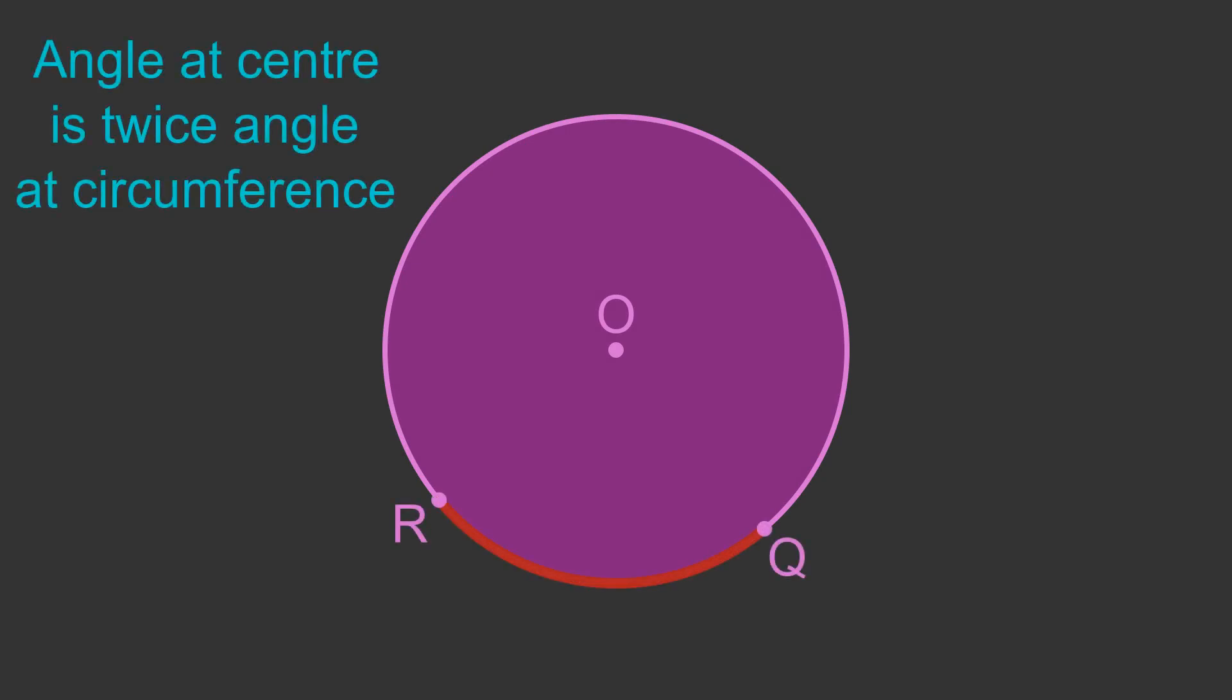The angle subtended by an arc at the centre of a circle is twice the angle subtended at the circumference. To illustrate what this means, here is an arc between the two points R and Q on a circle.